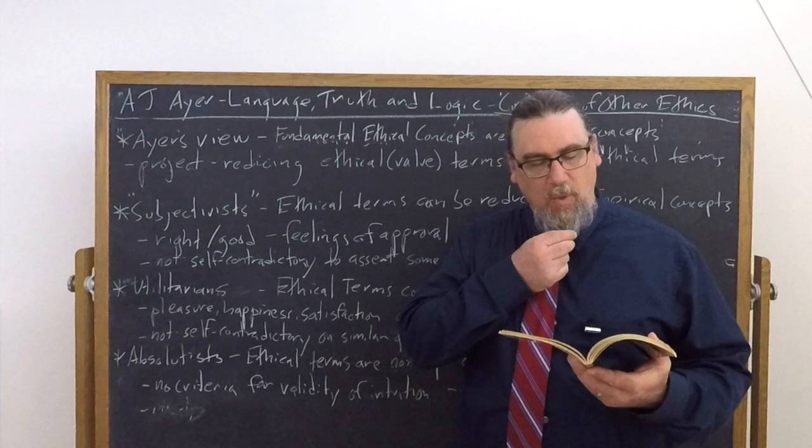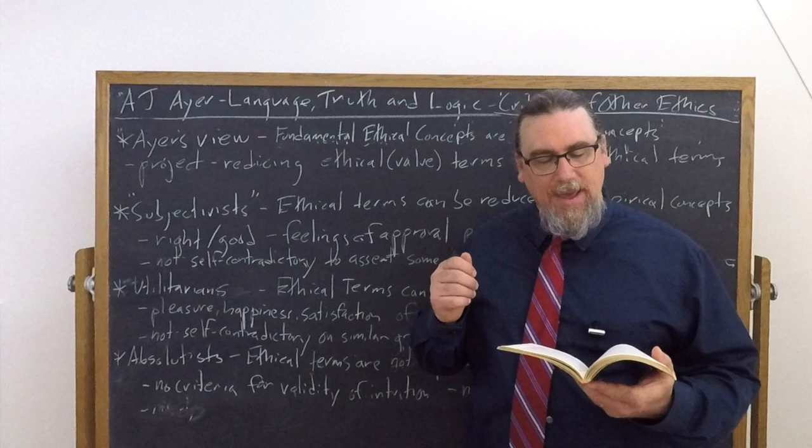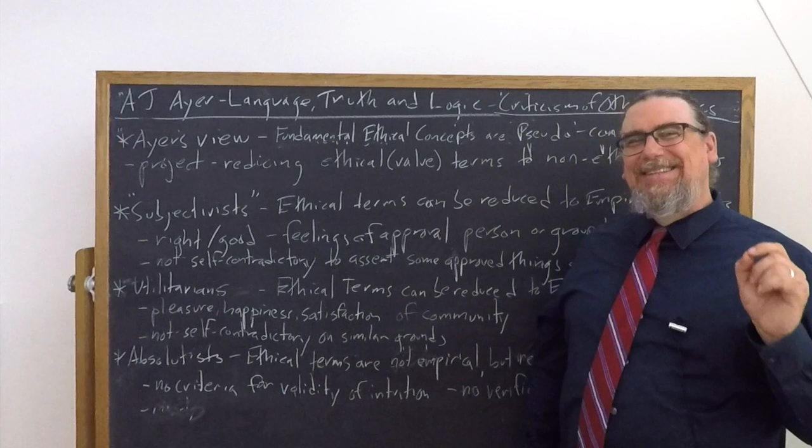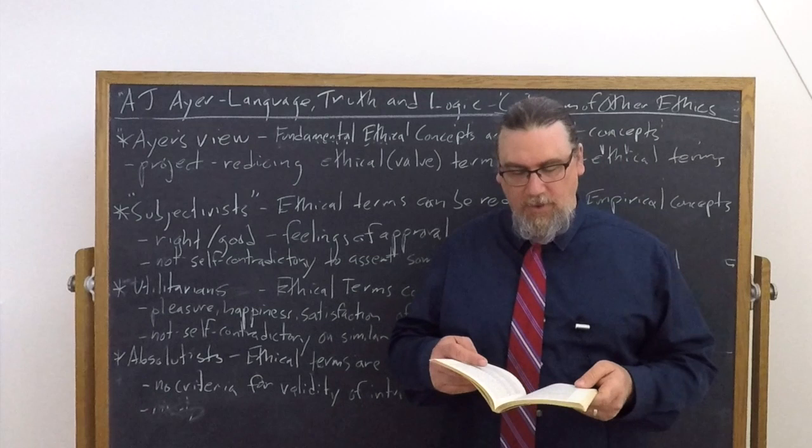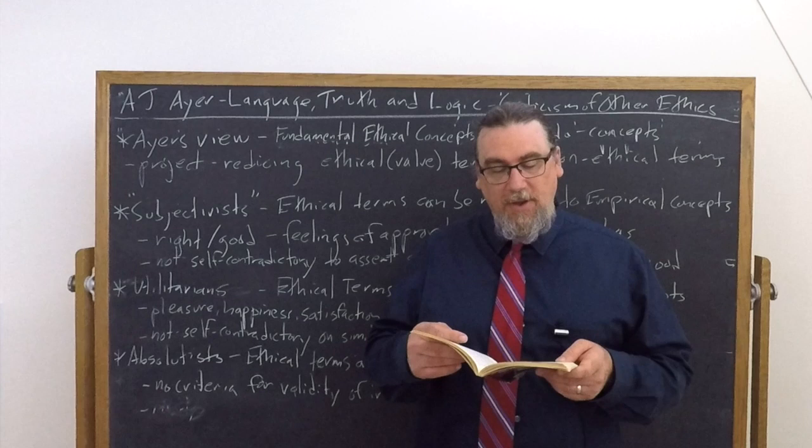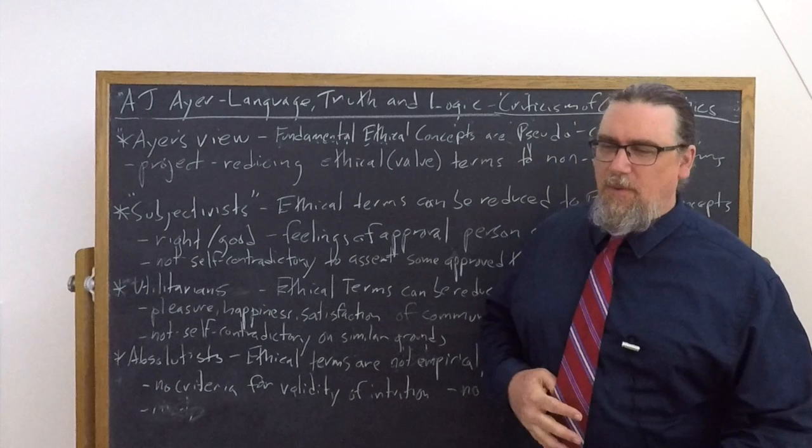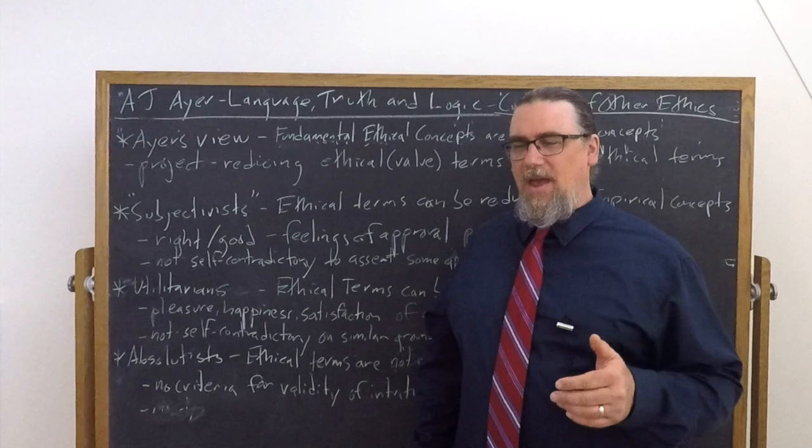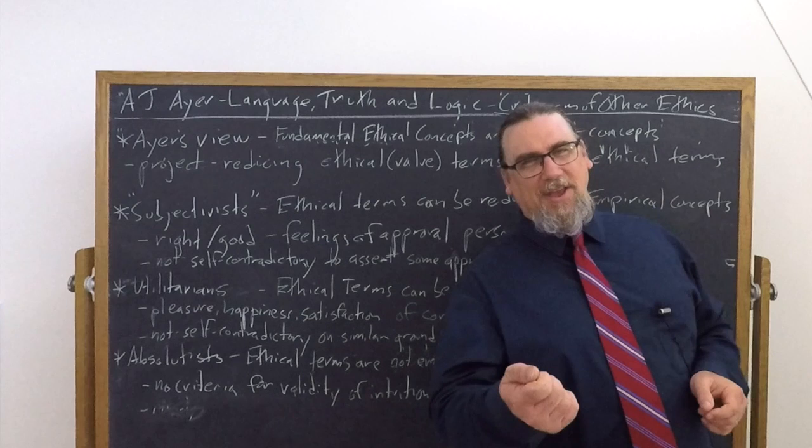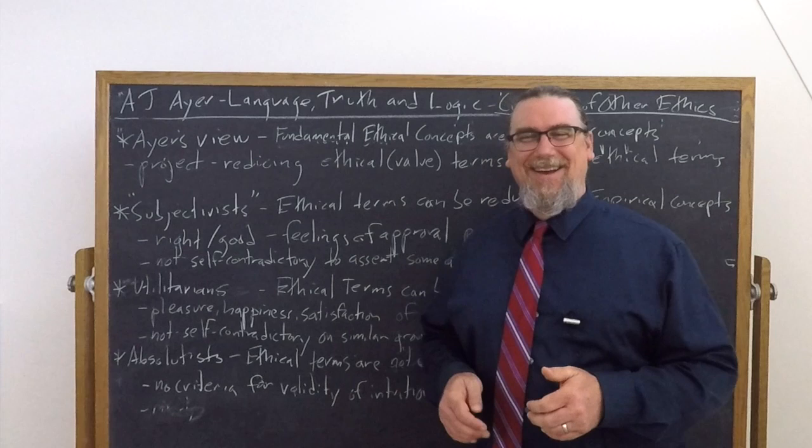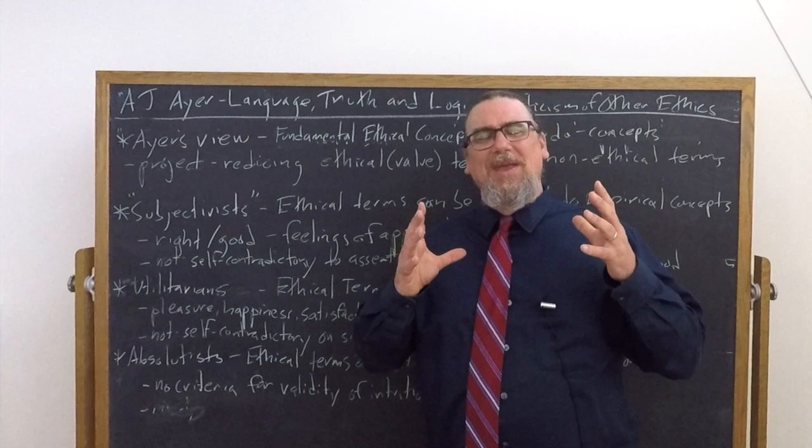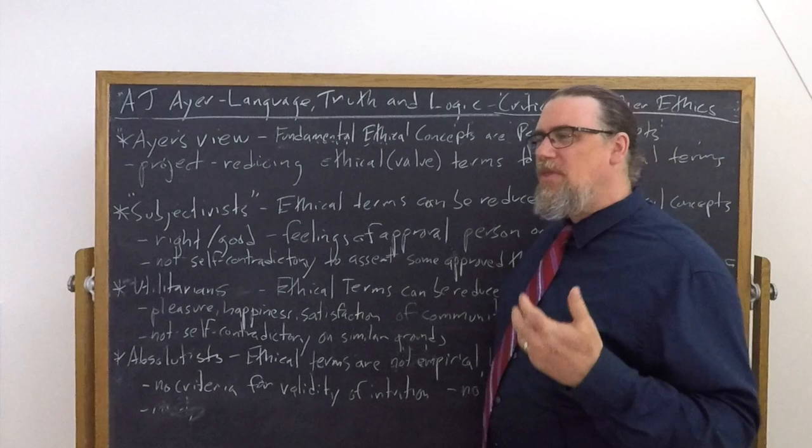Now, Ayer says that there's a problem with this. He says, we reject the subjectivist view that to call an action right or a thing good is to say that it is generally approved of. Why? Because it's not self-contradictory to say, to assert is his term, that some actions which are generally approved of are not right or that some things which are generally approved of are not good. Insofar as we can stand back and take a perspective that says, I understand that, for the most part, everybody views chewing gum in the classroom and sticking it underneath the table as a very small thing. But it's still wrong, right?